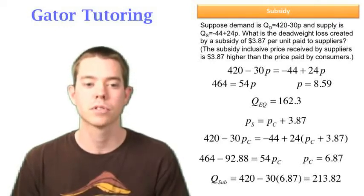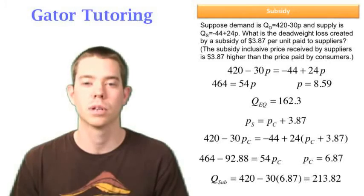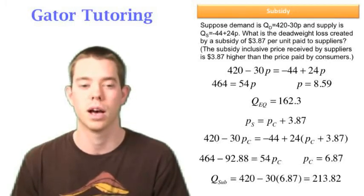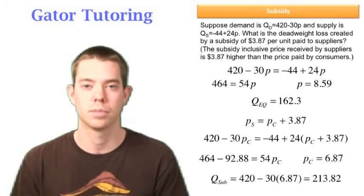If we would have solved for PS, which we would have plugged in 6.87 into our PS equals 6.87 plus 3.87, then we would have, in that case, we would have plugged in PS to our quantity supplied to get this new quantity for subsidy.